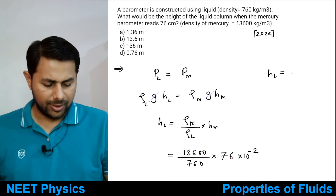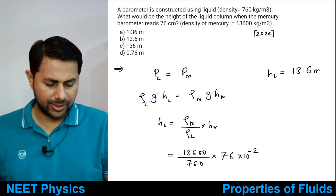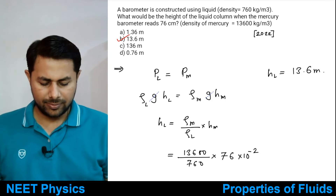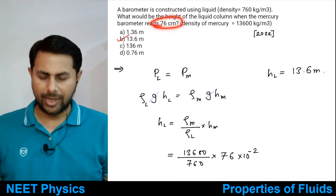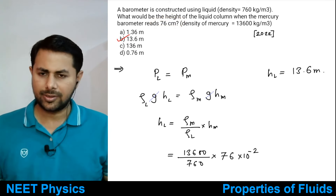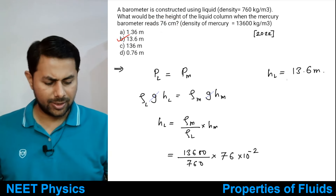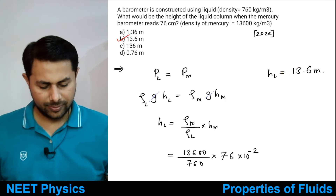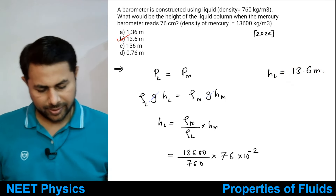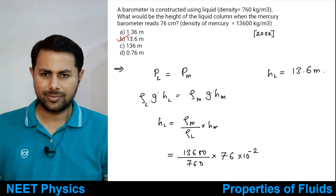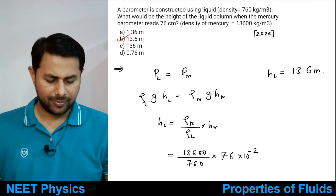So the mercury barometer reads just 76 centimeters — three fourths of a meter — while this liquid barometer reads 13.6 meters, which is very high. This shows why mercury is preferred: its high density means a manageable column height.